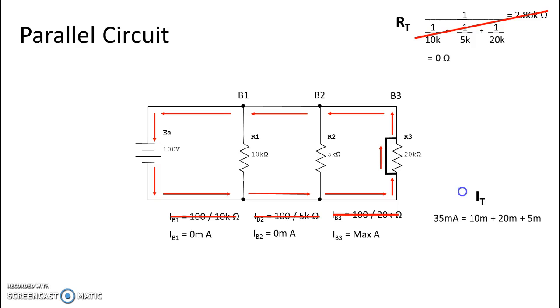So we look again at our calculations for current, and originally we had 35 milliamps, now of course we just have a maximum value. We don't know the exact value, we just know that it's high.